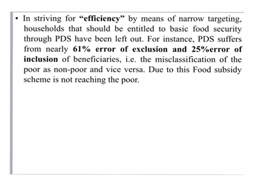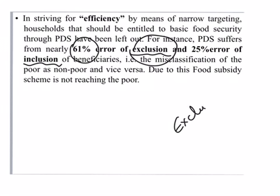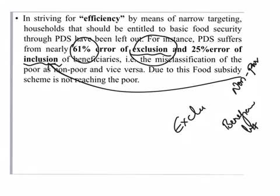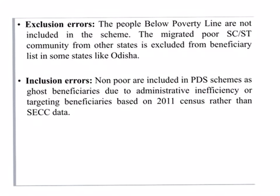In striving for efficiency in the distribution system, some errors have happened. These are called inclusion and exclusion errors — errors in deciding who the beneficiaries of these schemes are. According to a report, there is a 61% error of exclusion and a 25% error of inclusion, that is misclassification of the poor as non-poor and the non-poor as poor. Exclusion errors mean that those who are really poor are not included in the beneficiary list, while inclusion errors mean that those who are non-poor are included.